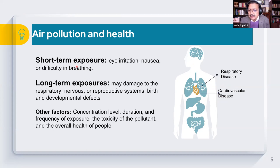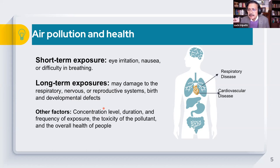Short-term problems include eye irritation, nausea, and difficulty breathing when going out in the city. Long-term exposures can cause serious problems related to respiratory and nervous systems, and there are findings showing that even reproductive systems can be impacted. The factors determining impact include concentration levels and duration of exposure — whether for a few hours, days, months, or many years. If you are in a polluted city breathing the same air for 10 to 15 years, long-term effects will start showing up.